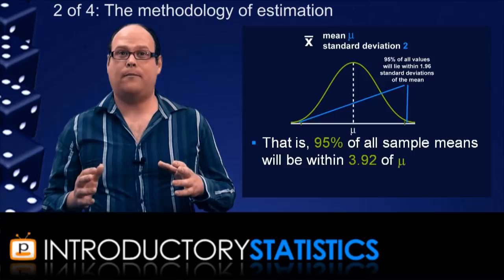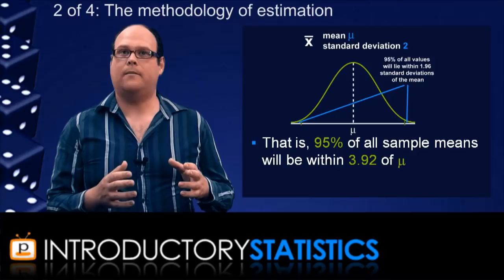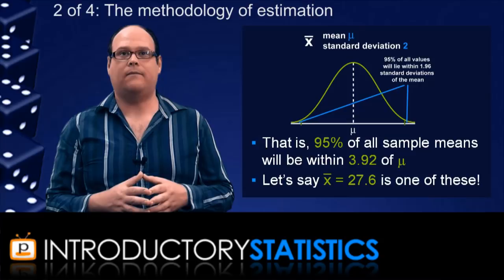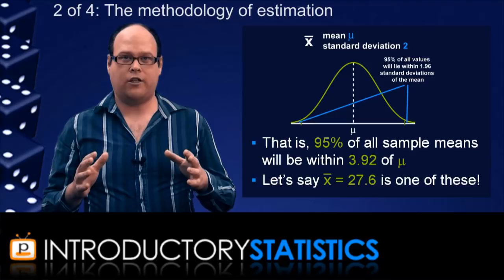In simpler language, this means that for 95% of all samples we could collect, the true population mean mu will be no more than 3.92 from the sample mean. And so, let's assume that our sample mean, 27.6, is one of these 95%. And 95% of the time, we would be correct in making that assumption.